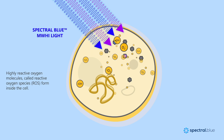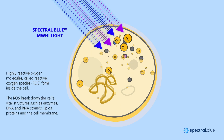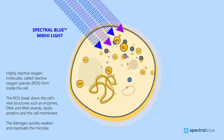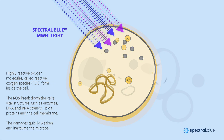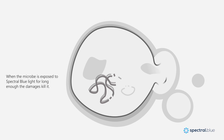The ROS can break down anything that is nearby, destroying vital cell structures such as enzymes, DNA, and RNA strands, lipids, proteins, and the cell membrane. This extensive damage will quickly weaken the microbe and inactivate it. When the microbe is exposed to Spectral Blue for long enough, the damages kill it.